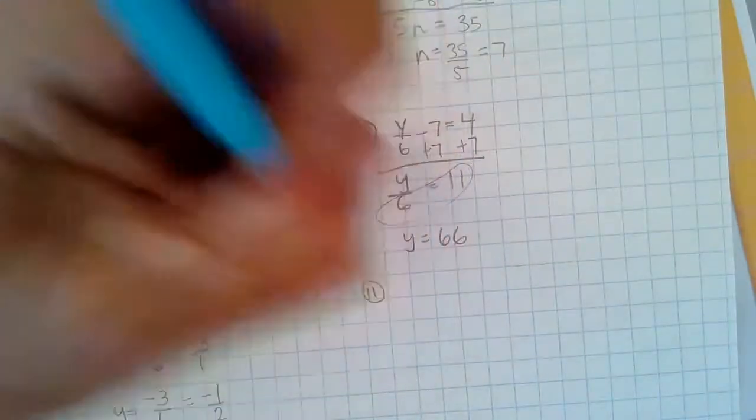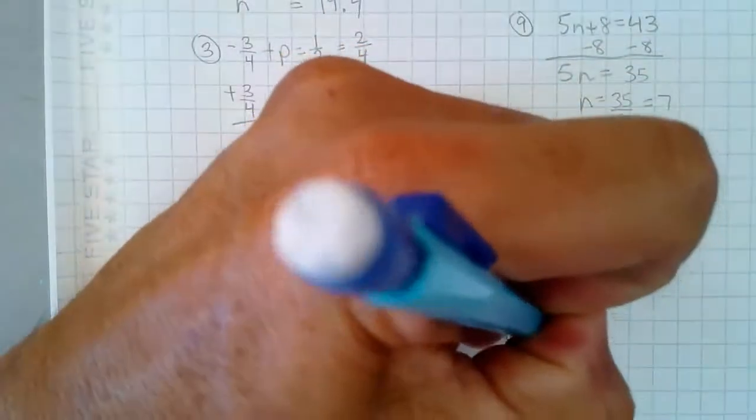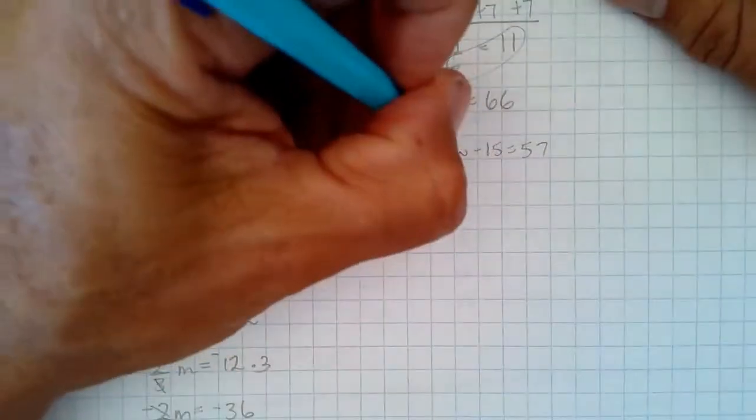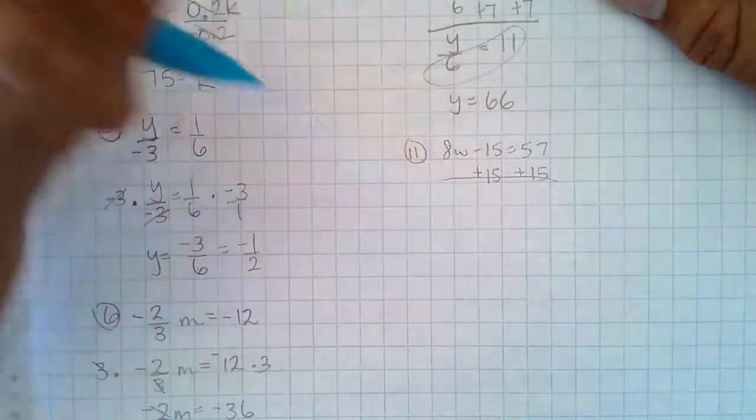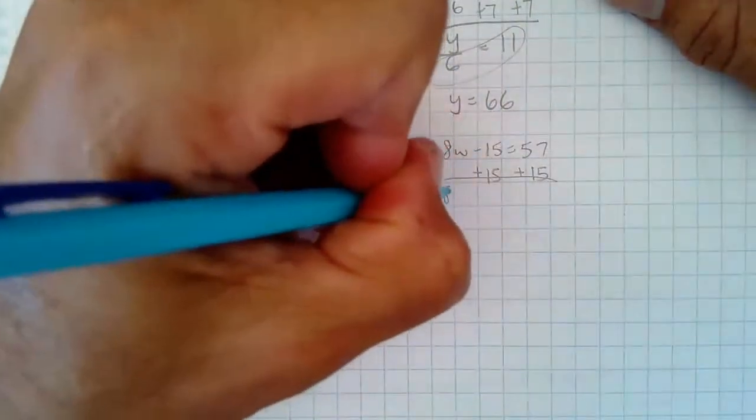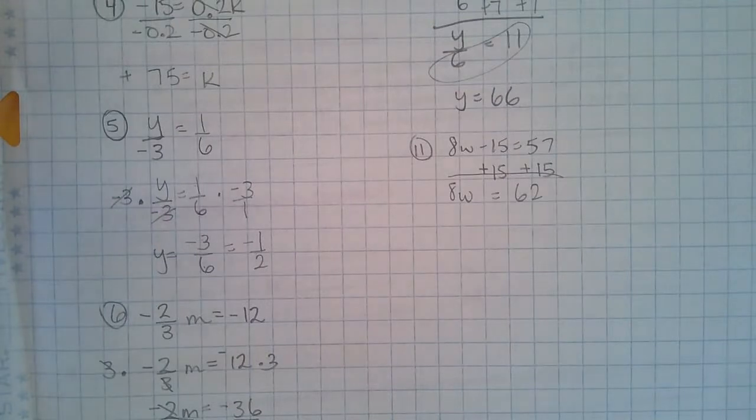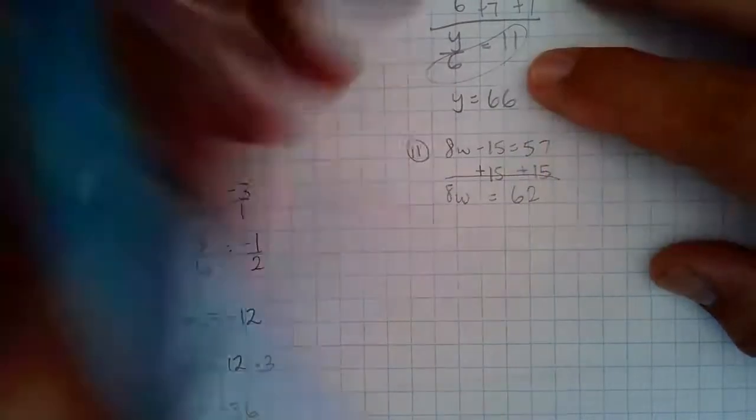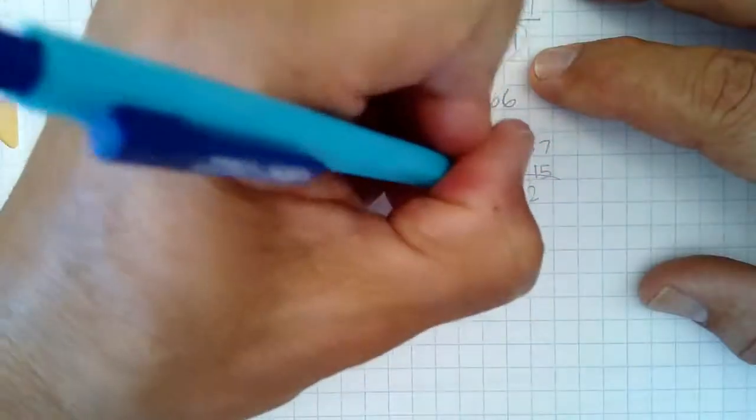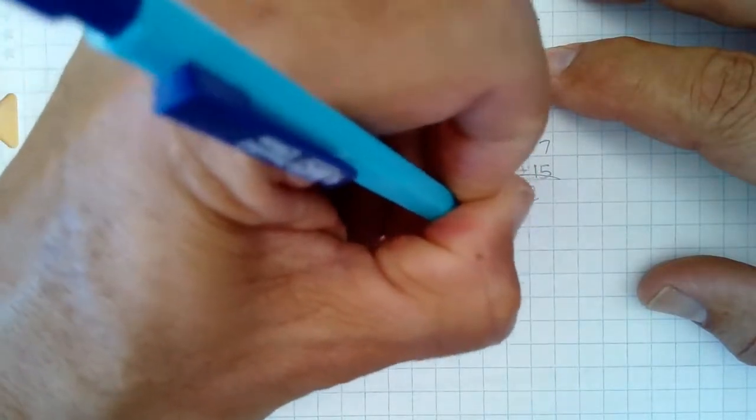Number 11, 8w minus 15 equals 57. I would add 15 to both sides using inverse operations. 8w equals 72, I believe. And then, it's going to be w. Since that's multiplication, I divide. 72 divided by 8 is 9.